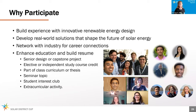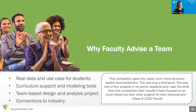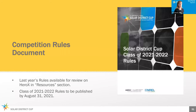The seminal document of the Solar District Cup are the competition rules. Last year's rules are available today for your review in the resources section of the HeroX.com platform. You can anticipate that the revised Class of 2021 to 2022 rules will be published by August 31, 2021. There are some minor updates and evolutions compared to last year's rules, but the structure of the competition is largely the same.